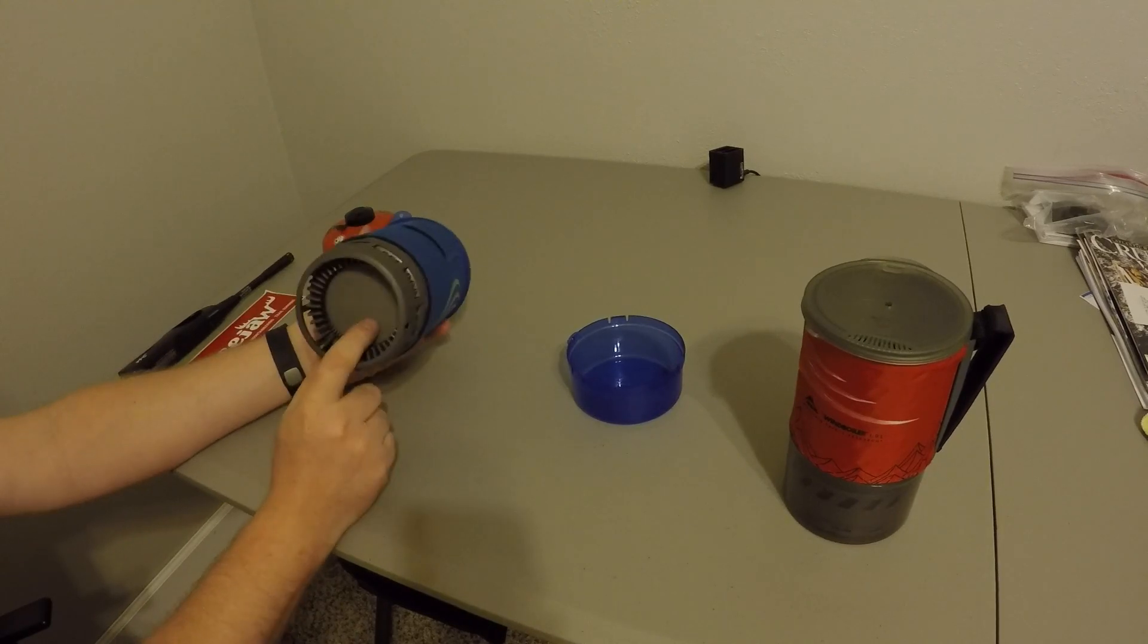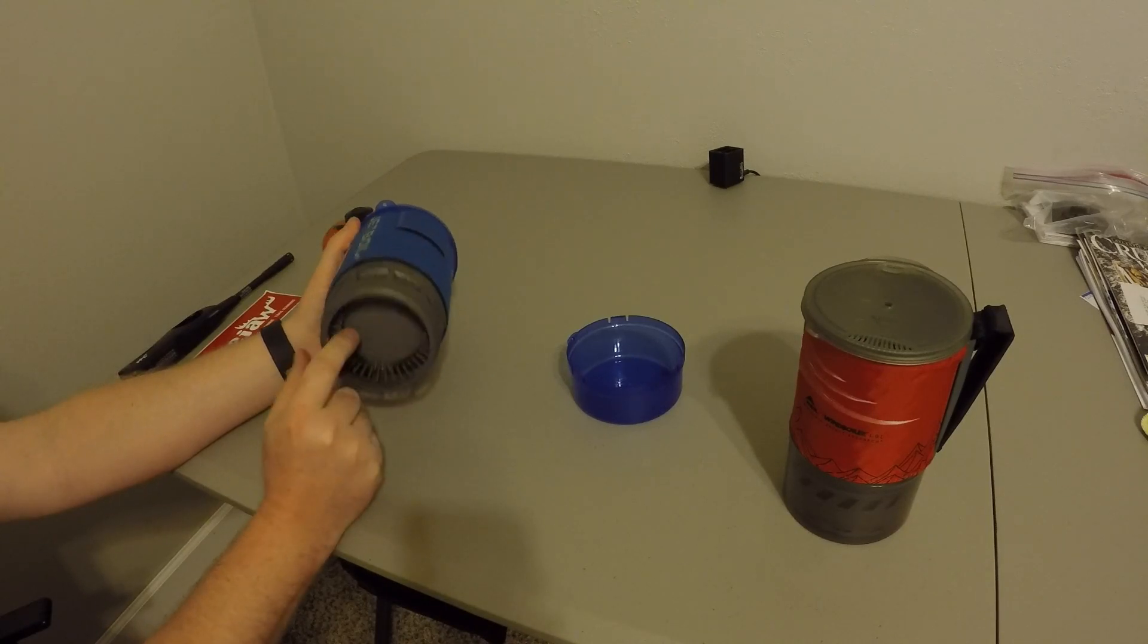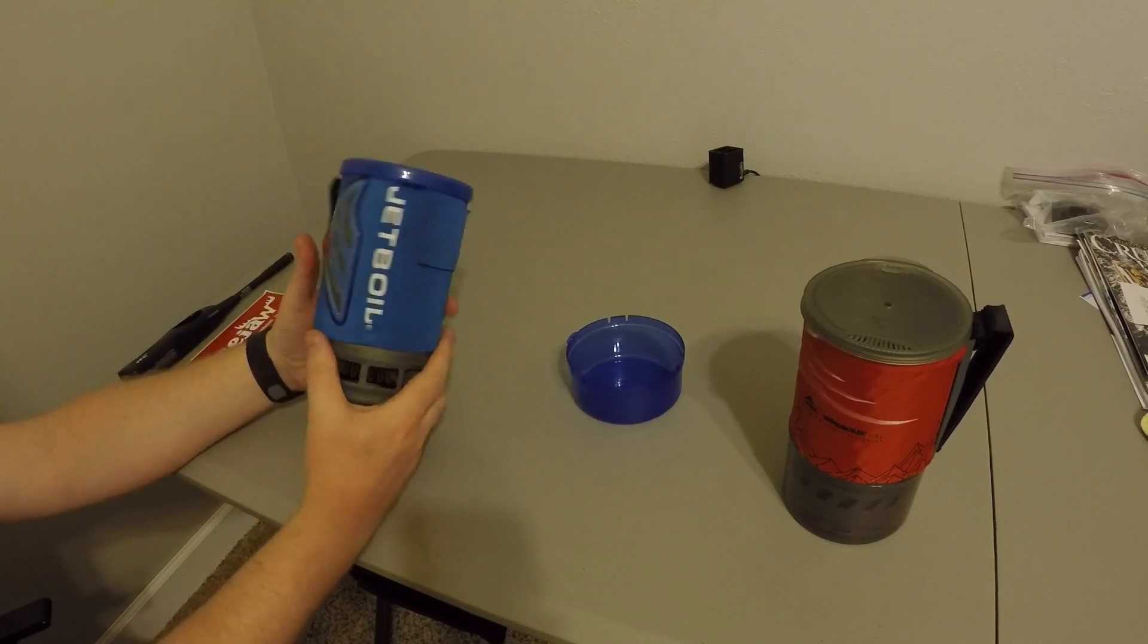So with the Jetboil, you have the flux ring. This is what is used for heat transfer so that when you apply your heating element, it transfers the heat to the bottom of the cup and allows it to boil.